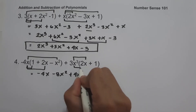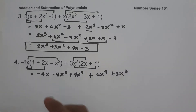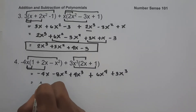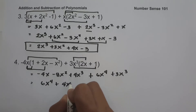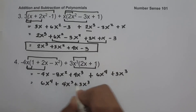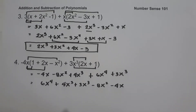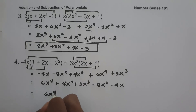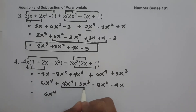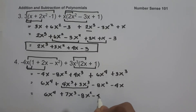And 3x cubed multiplied by 1 is 3x cubed. So let us rewrite this as 6x to the 4th, followed by 4x cubed plus 3x cubed, minus 8x squared, minus 4x. So let us combine like terms: we have 6x to the 4th, then 4x cubed plus 3x cubed gives us 7x cubed, and then negative 8x squared minus 4x. And this will be our answer.